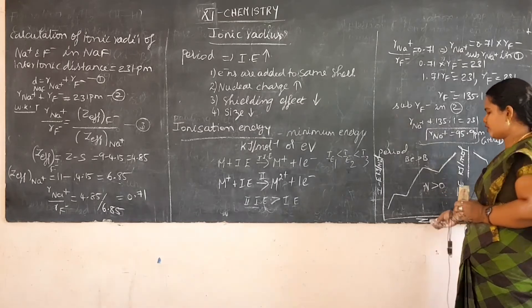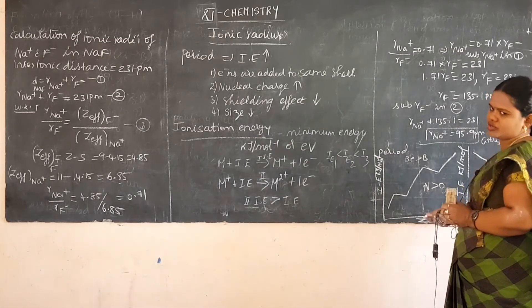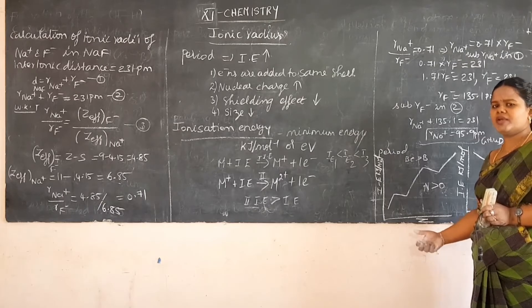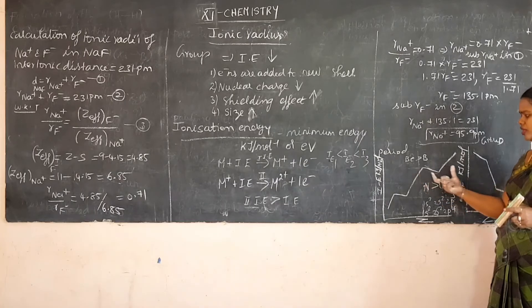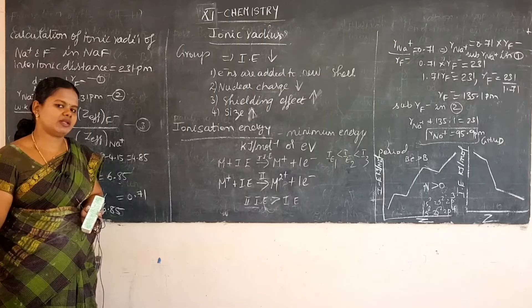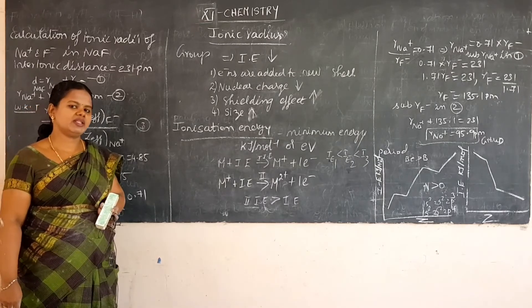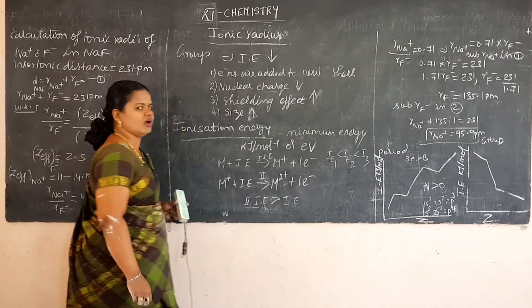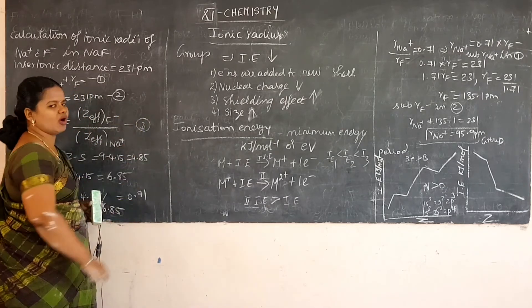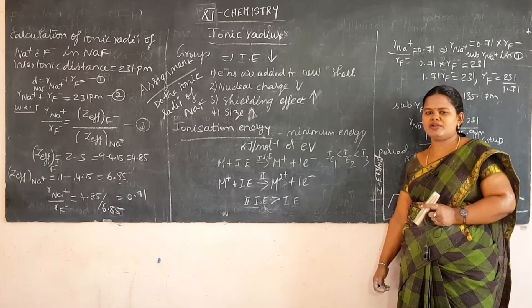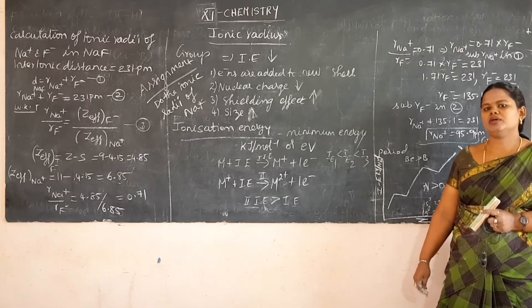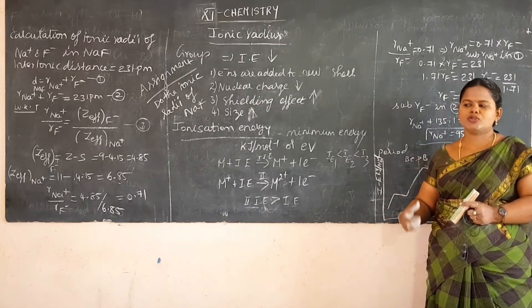Nitrogen has atomic number 7 with configuration 1s2, 2s2, 2p3 — a half-filled electronic configuration, which is extra stable. So we cannot easily remove an electron from nitrogen. Oxygen has atomic number 8 with configuration 1s2, 2s2, 2p4, where one orbital has a paired electron that is easier to remove. Therefore nitrogen has higher ionization energy compared to oxygen. This graph represents the increase in ionization energy along the period.